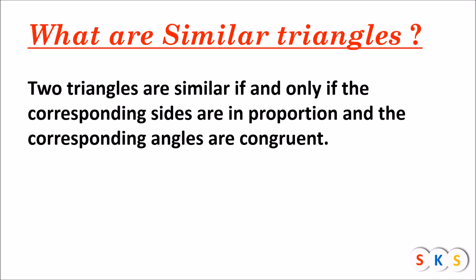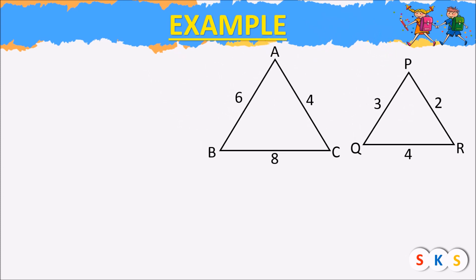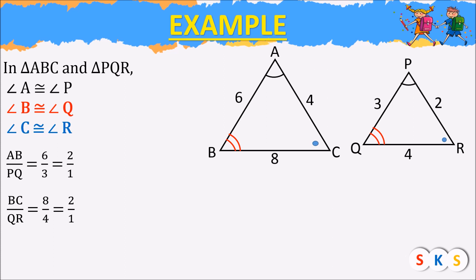Now we will try to understand similar triangles with the help of an example. Here we have two triangles ABC and PQR. In triangle ABC and triangle PQR, angle A is congruent to angle P, angle B is congruent to angle Q, and angle C is congruent to angle R. So all three angles of both triangles are equal. Here AB upon PQ equals 6 upon 3 equals 2 upon 1. Similarly, BC upon QR equals 8 upon 4 equals 2 upon 1. And AC upon PR equals 4 upon 2 equals 2 upon 1.